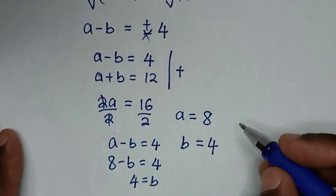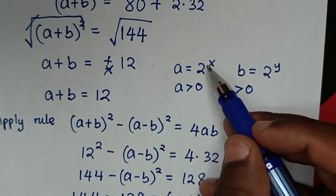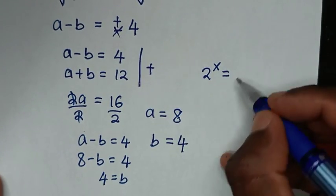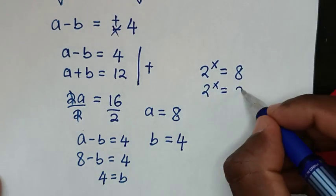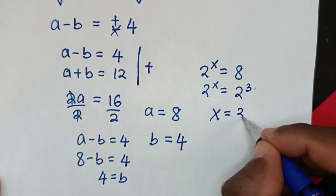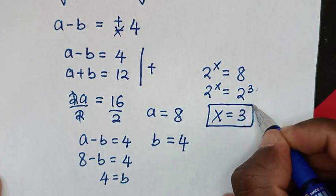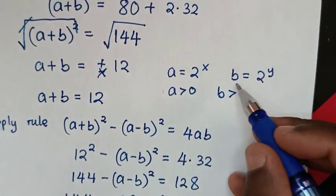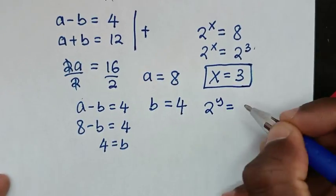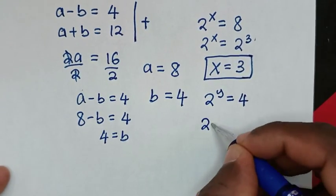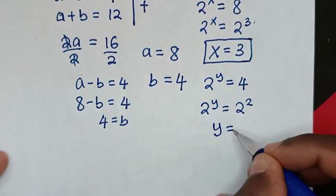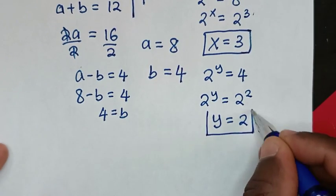We recall that a equals 2 power of x and b equals 2 power of y. So from a equals 8, we get 2 power of x equals 8, which is 2 power of 3. Since they have the same base, we compare the powers: x equals 3. From b equals 4, we get 2 power of y equals 4, which is 2 power of 2. Comparing powers: y equals 2.